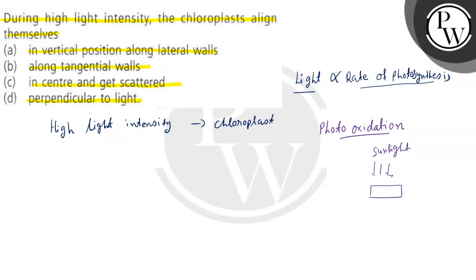If the chloroplast is oriented like this, and more sunlight comes, then what will it do? It will become perpendicular. By becoming perpendicular, what will happen? It will be protected from photo oxidation, because photo oxidation would cause more damage due to high intensity. So at very high light, chloroplasts become perpendicular.